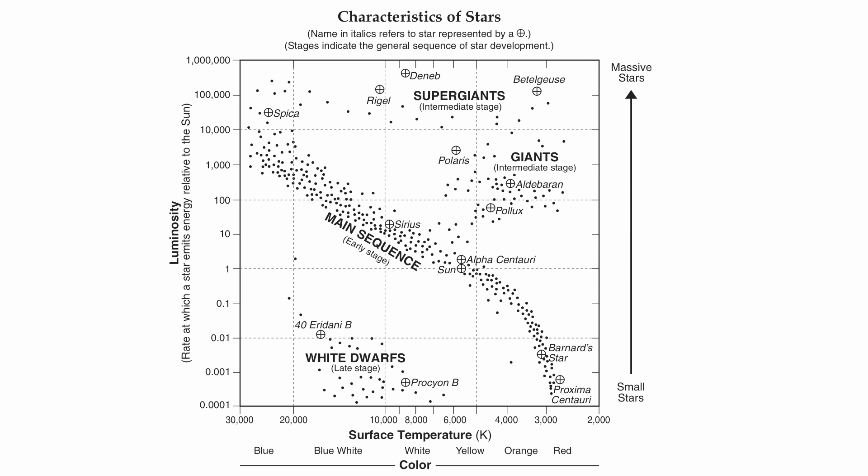But the one star I'm going to point out to you right now is just the sun. The sun's kind of right there in the middle, just kind of got highlighted right there. It's an average temperature, average color, and average luminosity.